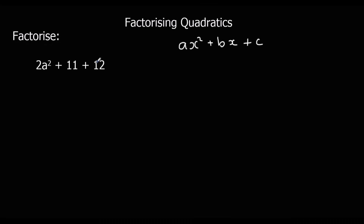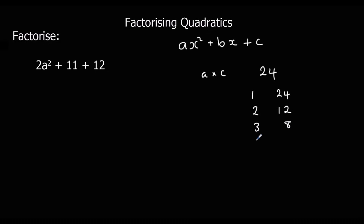So 2 multiplied by 12 — that's 24. We're going to do a times c, and that gives us 24. Now we're going to look at the factors of 24: what multiplies to make 24. So we have 1 times 24, 2 times 12, 3 times 8, 4 times 6, and there are no more. Those are all the factors of 24.